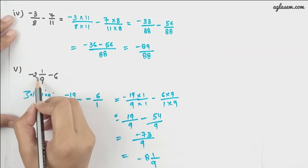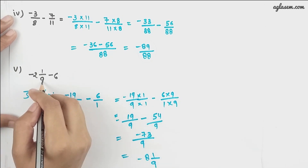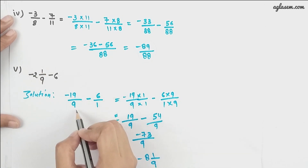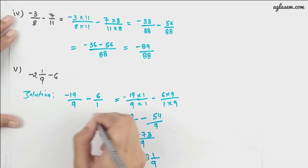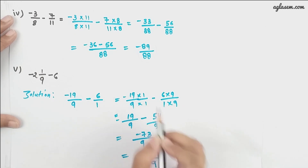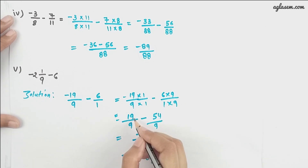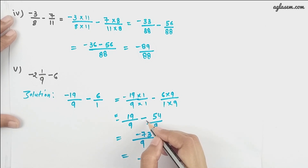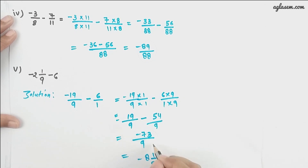Moving further, we have -2⅑ minus 6. First, convert the mixed fraction to p/q form, then make the denominators the same by multiplying -19/9 by 1 and -6/1 by 9, giving -19/9 minus 54/9. Solving further, we have -73/9, which as a mixed fraction is -8⅑.